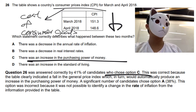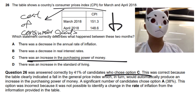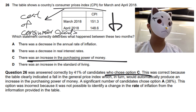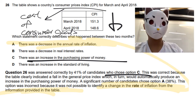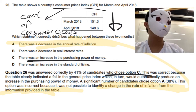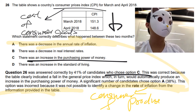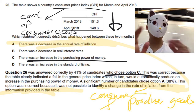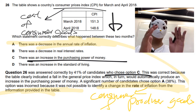But lots of candidates cannot pick the correct answer. They misunderstand that it's about inflation. For inflation, it would consist of both consumer goods and producer goods to calculate the inflation rate. Without the changes in the price level of producer goods, inflation cannot be calculated in this question. So the answer must be C.